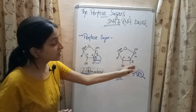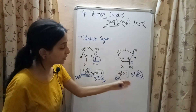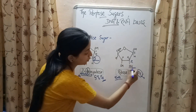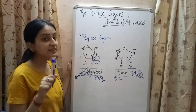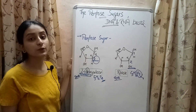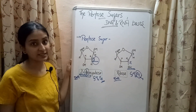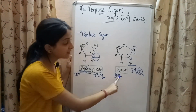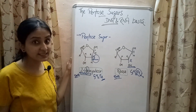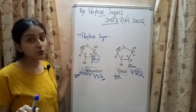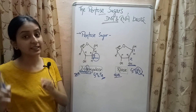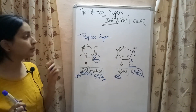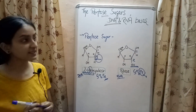The presence of this additional oxygen atom in ribose sugar leads to the formation of a hydroxyl group, and since the hydroxyl group is highly susceptible to hydrolysis, that is why RNA is more reactive, less stable, as well as easily degradable as compared to DNA. So this is all about the pentose sugars.